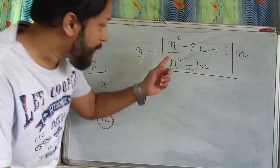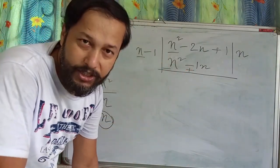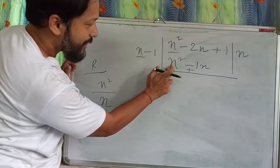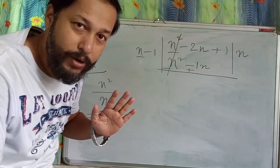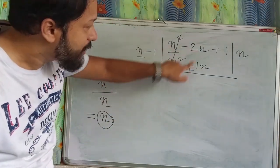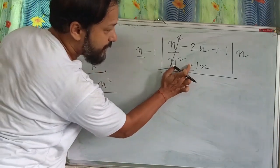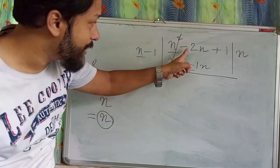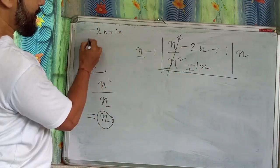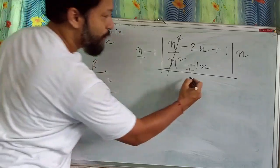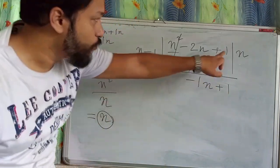Just change the sign: plus was there, write minus; minus was there, write plus. Now, plus n² minus n² will cancel. Then minus 2n plus n gives minus n. So we write minus n plus 1, bringing the 1 down.